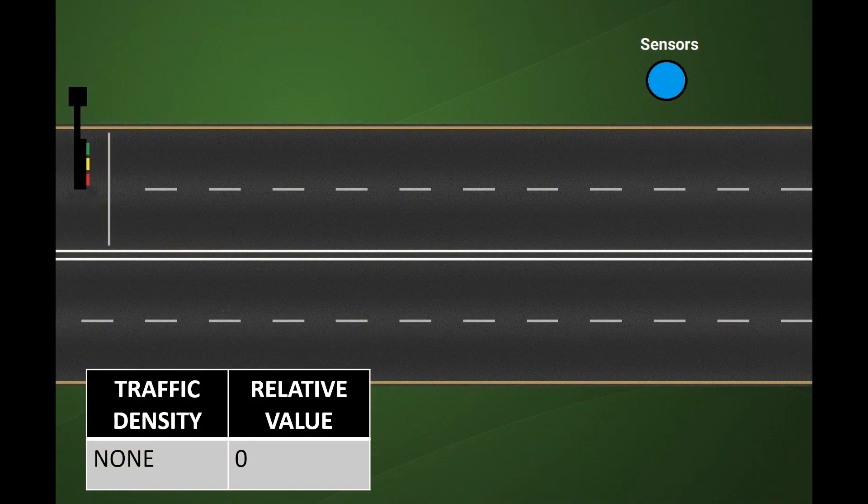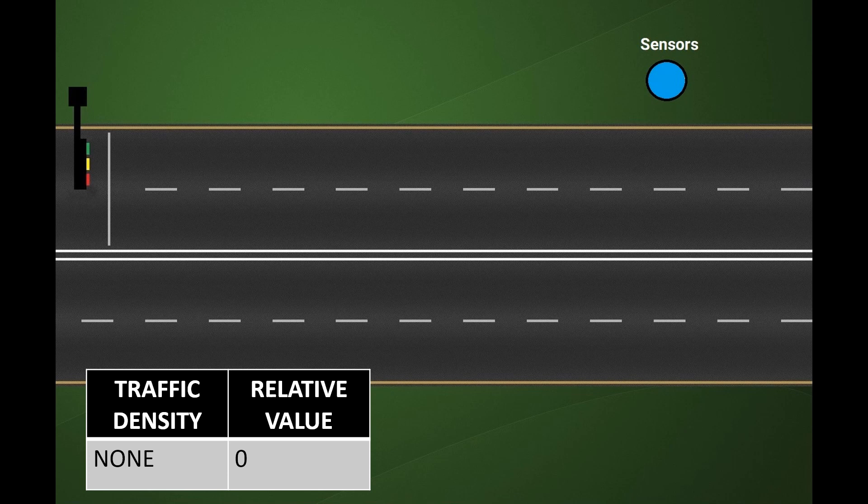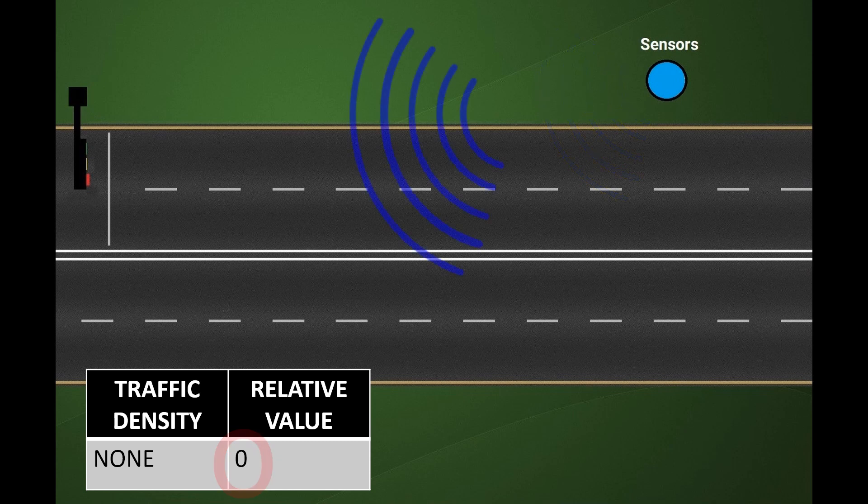Sensors are strategically placed at different positions on the road which return density information, and this data is sent to a gateway where an algorithm runs which decides on how long a signal remains green.